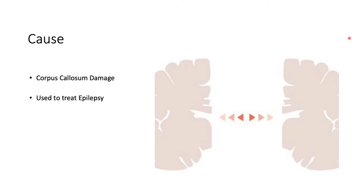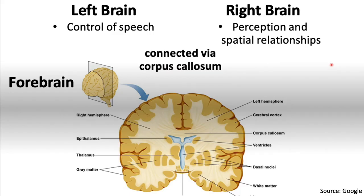Split brain occurs when you have damage to your corpus callosum or if it's severed. An example of why it might be severed: a patient with epilepsy may have a seizure that starts in one part of their brain and travels to the other half, which exacerbates the seizure. If you cut the corpus callosum, you prevent information from passing through to the other side of the brain, which is supposed to help with epilepsy.